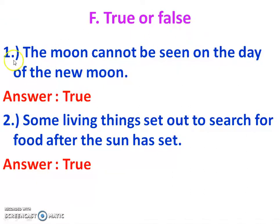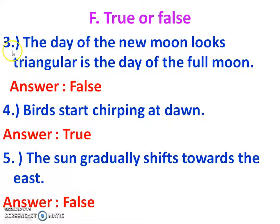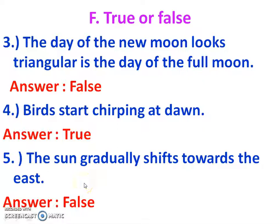Section F: True or False. Statement 1: The moon cannot be seen on the day of the new moon. Answer: True. Statement 2: Some living things set out to search for food after the sun has set. Answer: True. Statement 3: The new moon day looks triangular — this is false; that is the full moon day. Answer: False. Statement 5: Birds start chirping at dawn. Answer: True. Statement 6: The sun gradually shifts towards the east. Answer: False.